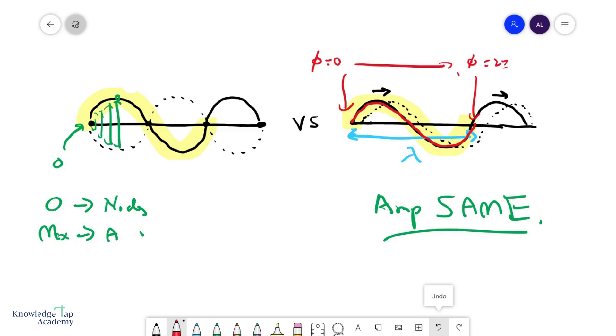Every particle in one wavelength has a gradually increasing phase from zero to two pi. But if I look at a stationary wave, these guys over here technically all move up together. Their amplitudes are different, but they move up and down together.